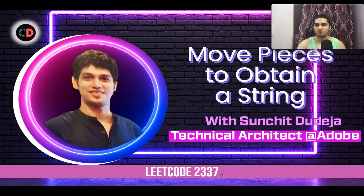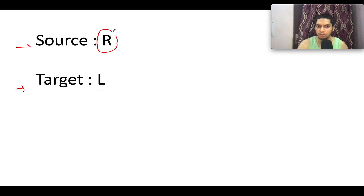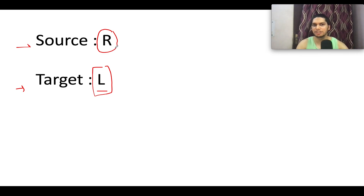This is a medium-level question on LeetCode. The first test case is a trivial one: the source string is 'R' and the target string is 'L'. This conversion is not possible because the characters are different. Whenever the characters at corresponding positions (ignoring spaces) are different, we abort the process and return false.